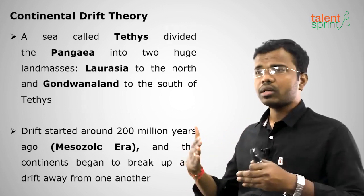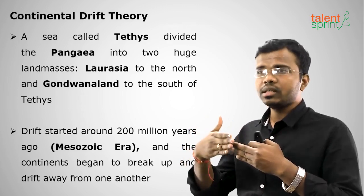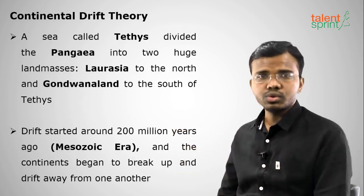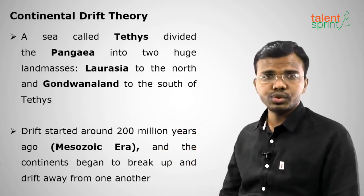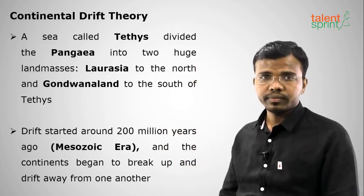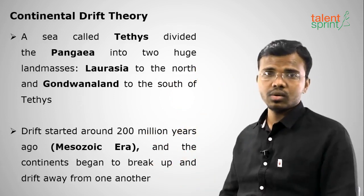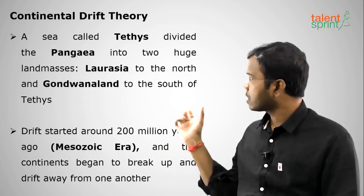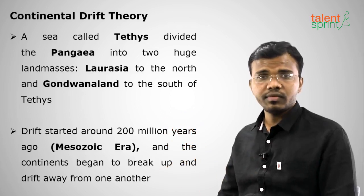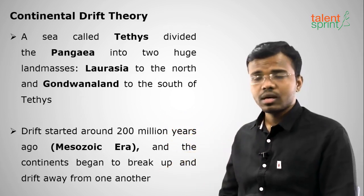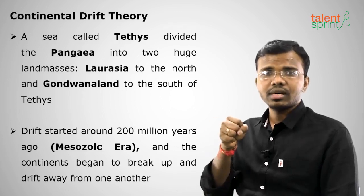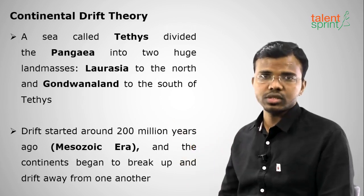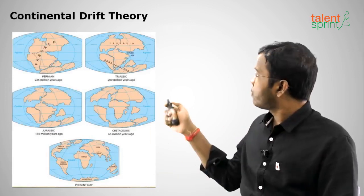Slowly, Pangea began disintegrating because the water body was pushing the landmasses, creating distinctions. Like a single landmass dividing when water is pushed onto it, Pangea disintegrated into two — Laurasia and Gondwana Land. This happened around 200 million years ago, in the Mesozoic Era.